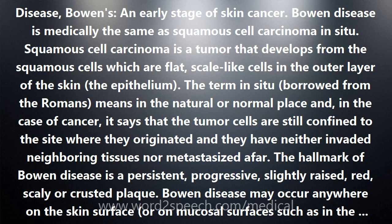The hallmark of Bowen disease is a persistent, progressive, slightly raised, red, scaly or crusted plaque. Bowen disease may occur anywhere on the skin surface, or on mucosal surfaces such as in the mouth.